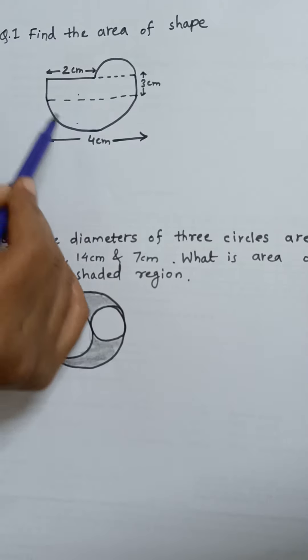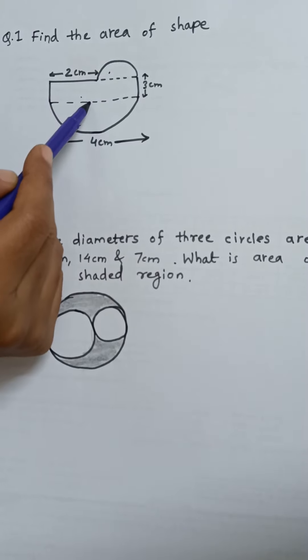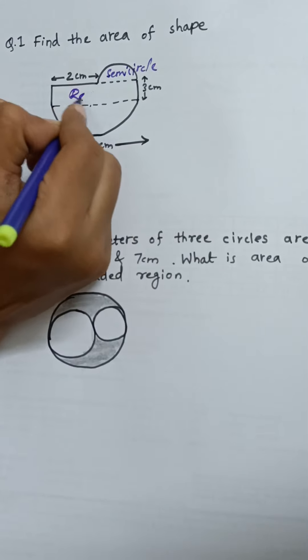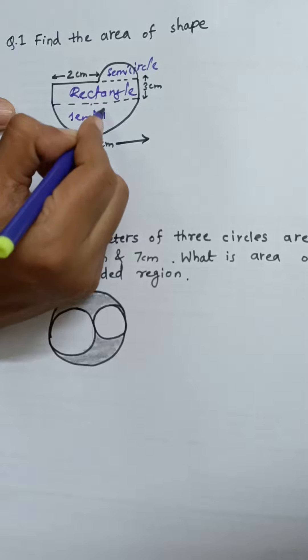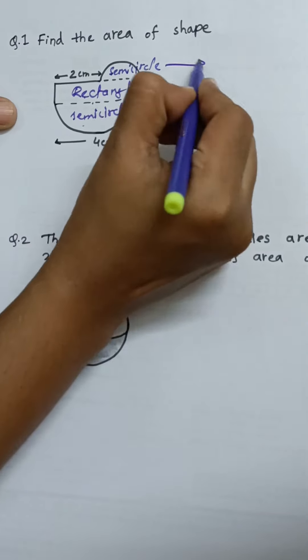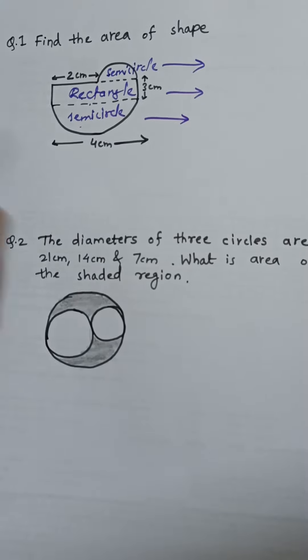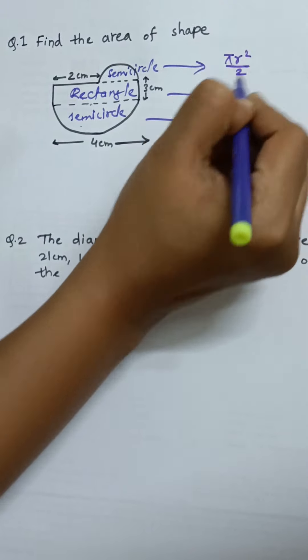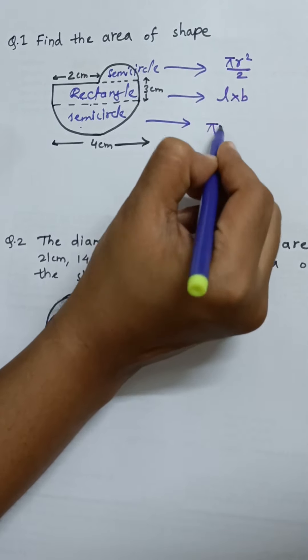When we want to find the area of this given shape, we need to find the area of this semicircle, this rectangle, and one more semicircle. So this is a semicircle, this shape is a rectangle, and this is also semicircle. We'll find the three areas and then sum them up. For semicircle, area is pi r square by 2, area for rectangle is l into b, area of this circle is pi r square by 2.